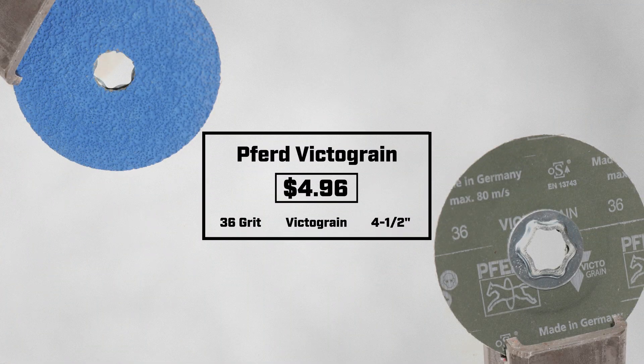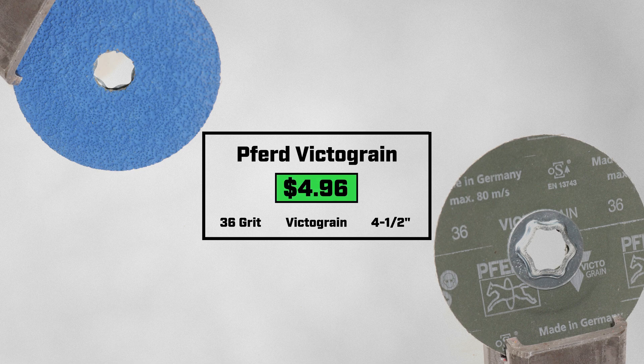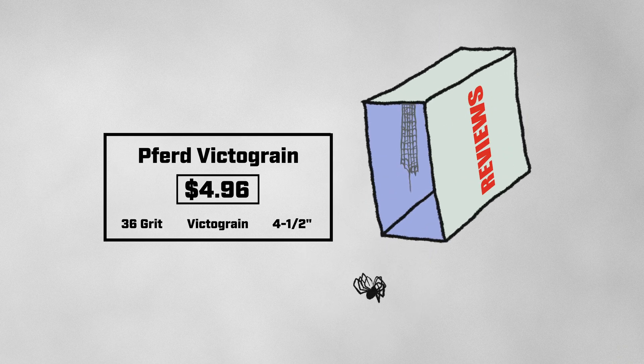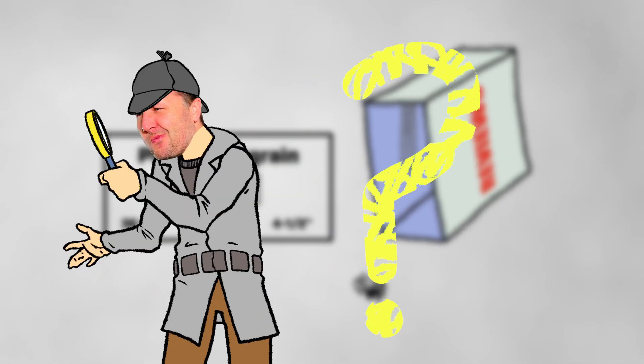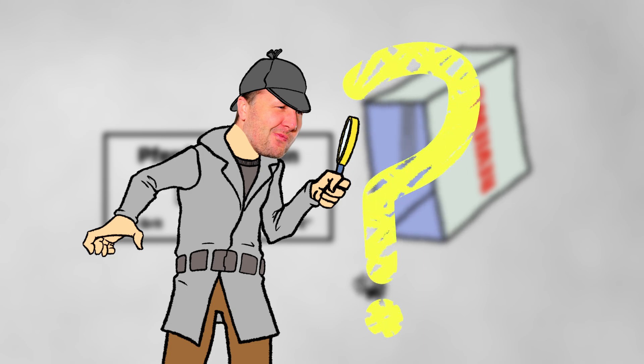Today I am testing the Pferd Victagrain Fiber Disk, coming in at $4.96. This is at the higher end of pricing for fiber disks, yet I can't seem to find any reviews about it. So what kind of performance can I get out of this pricey fiber disk? Let's test it to find out.